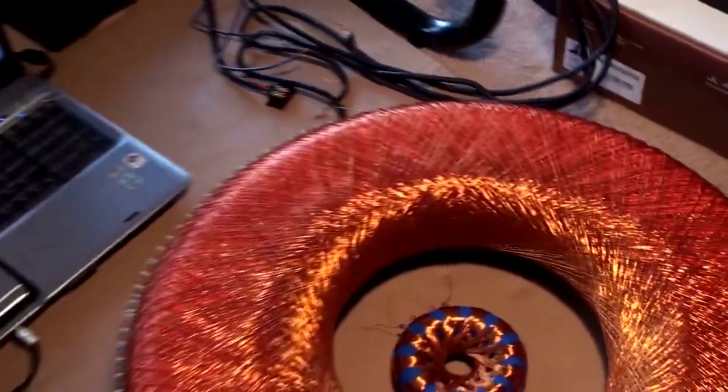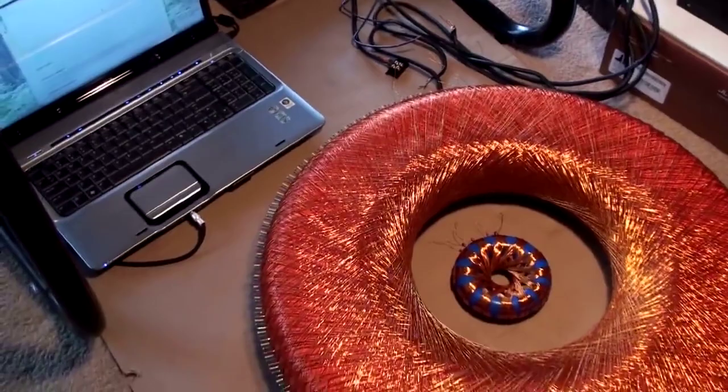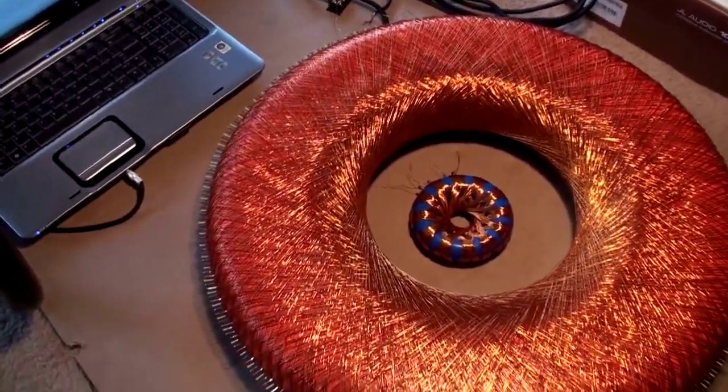There's 8 complete wraps in the big coil, 14 complete wraps in the little one.